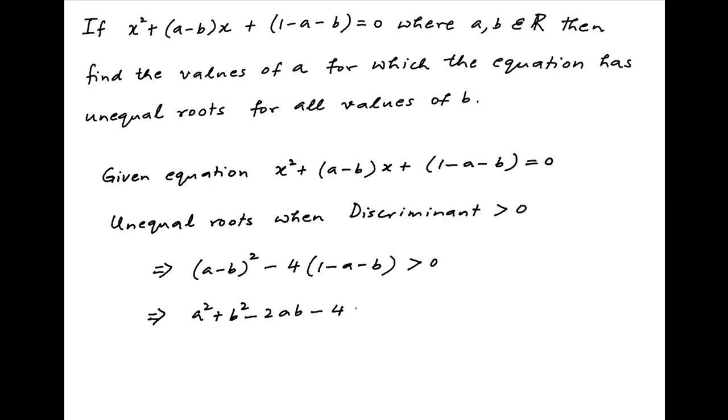This can be rearranged as b² - (2a-4)b + (a² + 4a - 4) greater than 0. The left-hand side is a quadratic in b and it is greater than 0.